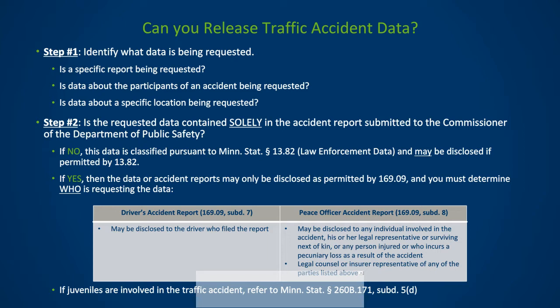If the requested data is contained in a peace officer's accident report, then it may be disclosed to any individual involved in the accident, the representative of the individual's estate, the surviving spouse, one or more surviving next of kin, a trustee appointed under Section 573.02, any other person injured in person or property or means of support, or who incurs other loss by virtue of the accident, or legal counsel or representative of the insurer of any person described. If the traffic accident data concerns juveniles, please refer to Minnesota Statute Section 260B.171, Subdivision 5D.